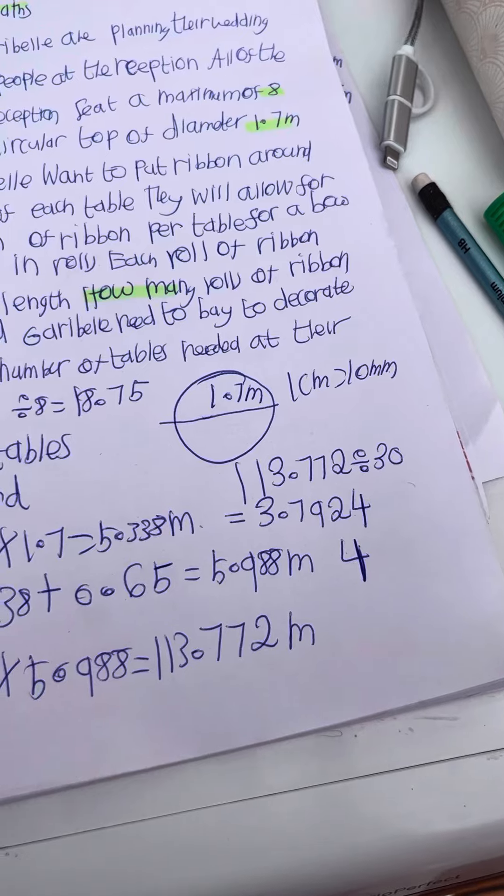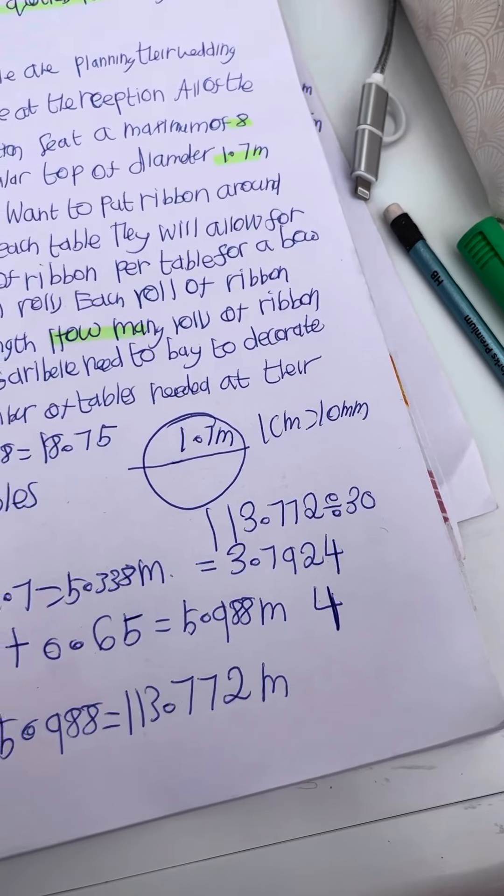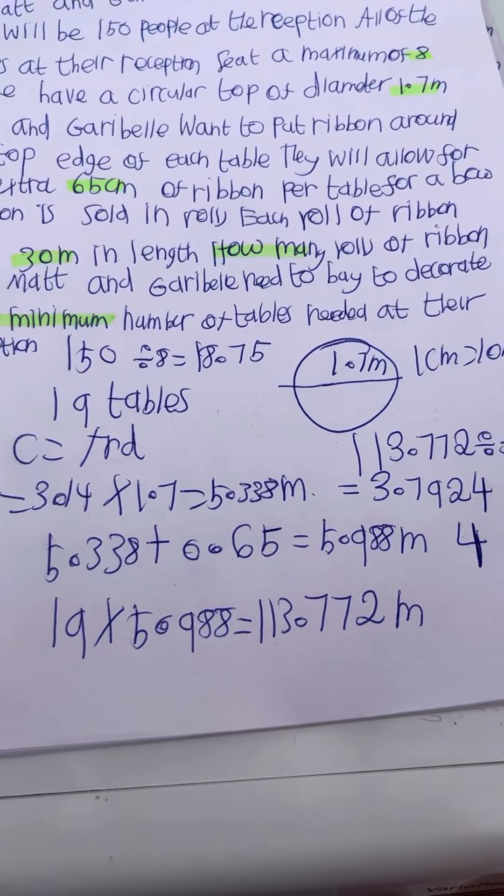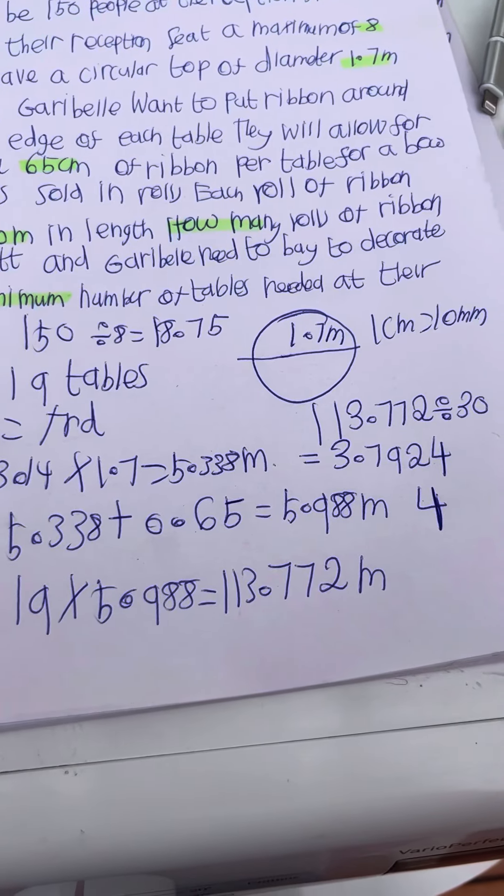Then if we do 113.772 divided by 30, that would be 3.7924 rolls. That 113.772 comes from 19 times 5.988 metres.